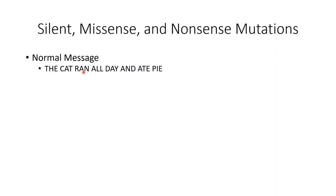Notice that the sentence is made up of a series of three-letter words, so that each word can be thought of as a codon. Unlike the genetic code, however, we won't limit ourselves to the four bases of the genomic alphabet. This first sentence represents the message in its native form, as it was meant to be presented.